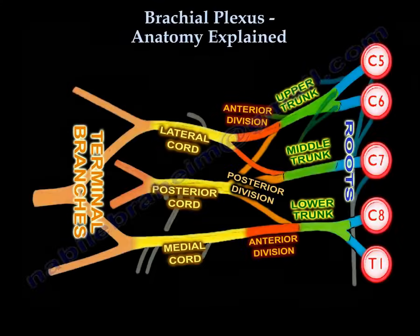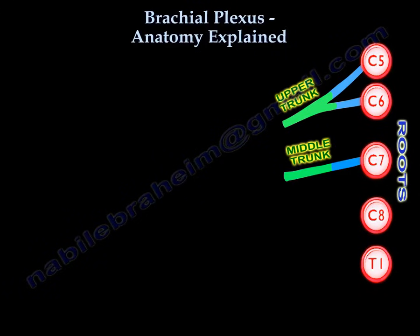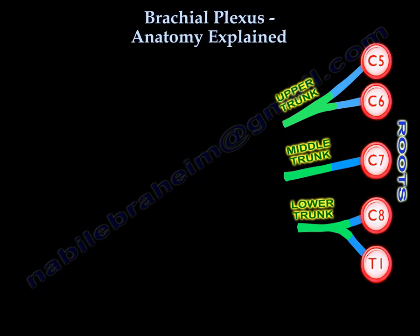Now let's draw the plexus together. There are five roots: C5, C6, C7, C8, T1. The top two roots, C5 and C6, will unite and make the upper trunk. The C7 nerve root will stay alone and become the middle trunk. C8 and T1 join together so the lower two roots unite to make the lower trunk.